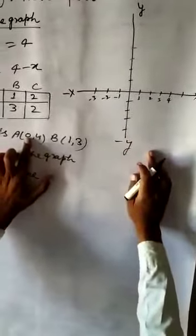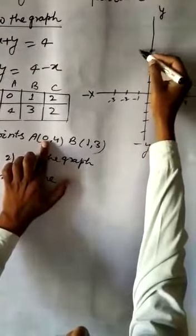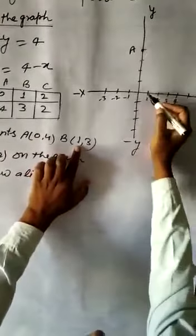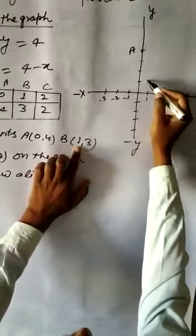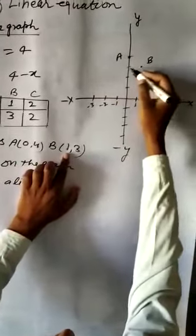0 comma 4. x equal to 0, y equal to 4. This is A point. B 1 comma 3. Then x equal to 1, so y equal to 1 to 3. This is B point.